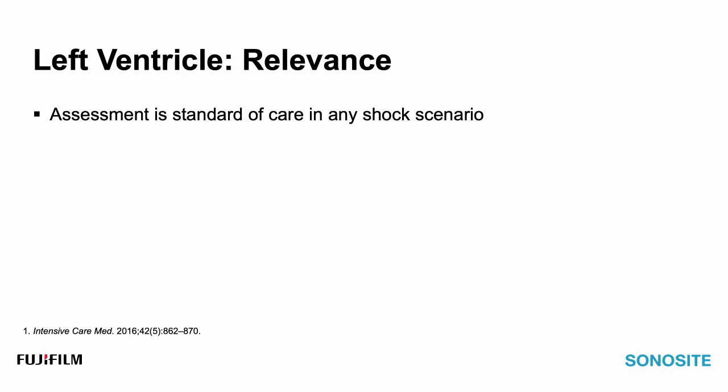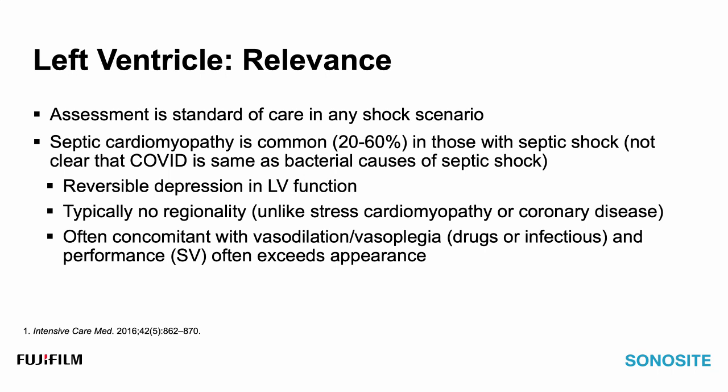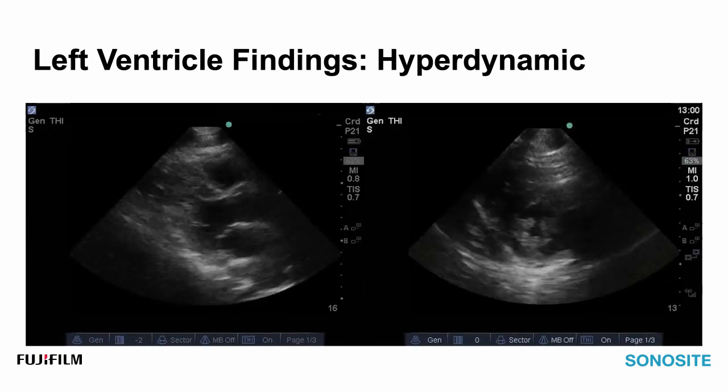Now let's talk about the left ventricle. The LV gets the lion's share of attention when considering patients in shock. In context of respiratory failure, if your patient has an infectious etiology — particularly bacterial — septic cardiomyopathy is seen in 20 to 60 percent of those with septic shock. It's not clear that COVID will lead to this, but it's useful to be on the lookout. Largely, septic cardiomyopathy creates a reversible depression in LV function without regionality — it won't be just focal wall segments but the whole ventricle. Physiologically, these patients are often vasodilated, so even though the LV might look startling, some can maintain stroke volume because of very low afterload.